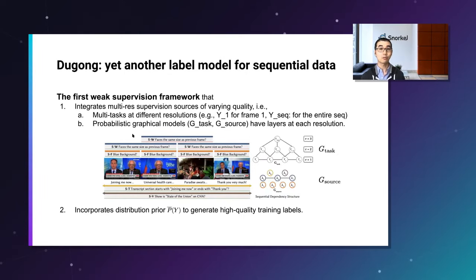The second reason is that this label model right here has no way to incorporate distribution prior. For example, how frames within interviews are distributed within the scene. Intuitively, we can imagine that Bernie Sanders would appear all four frames or none of the frames, rather than just the first two frames or last two frames or single frame or random frames. If the label model takes account of this sequential distribution prior, it'll work better on sequential data. That's the motivation to come up and work on this Dugong, yet another label model for sequential data. According to the paper, this Dugong is a weak supervision framework that does two things.